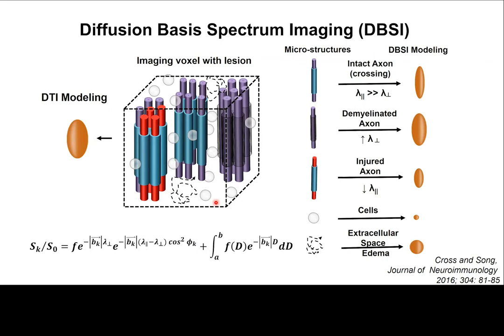What is diffusion-based spectrum imaging? Here is a cartoon representing an image of a voxel containing optic nerve. We can see it consists of demyelinated axons, intact axons, and axonally injured axons. There are also inflammatory cells present and interactions in the interstitial space. With diffusion-based spectrum imaging, we detect and decompose all the signal contributions from each component to give specific maps and model the signal patterns.